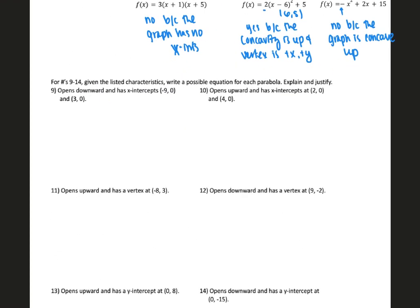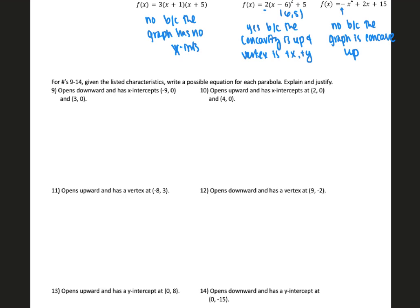Problems 9 through 14 — we list the characteristics and write an equation for each parabola. Number 9: opens downward and has x-intercepts. Since we have x-intercepts, we write it in factored form. Our a value needs to be negative, so pick any negative value — maybe negative 2. Plugging in the x-intercepts with opposite signs: f(x) = negative 2(x plus 9)(x minus 3). Number 10: opens upward and has x-intercepts at 2, 0 and 4, 0. Factored form again. f(x) = 1(x minus 2)(x minus 4), switching the signs for the x-intercepts.